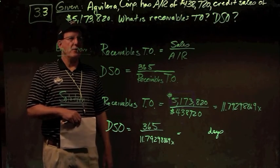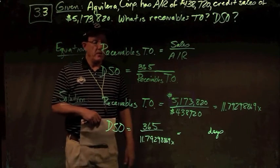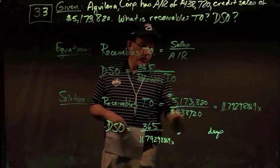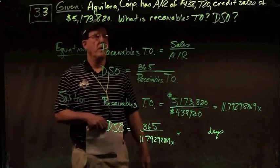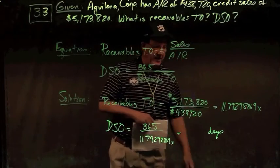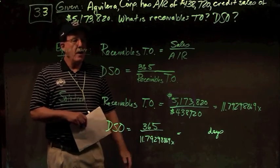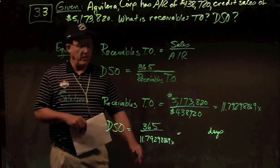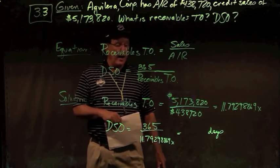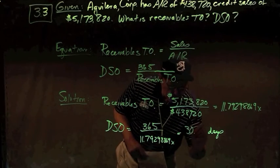Day sales outstanding are 365 divided by the receivable turnover number calculated above. Receivables turnover is $5,173,820 divided by $438,720 of accounts receivable, and I get 11.7930 times. Then to get day sales outstanding, I take 365 days divided by 11.7929 times and I get a day sales outstanding of 30.95 days.